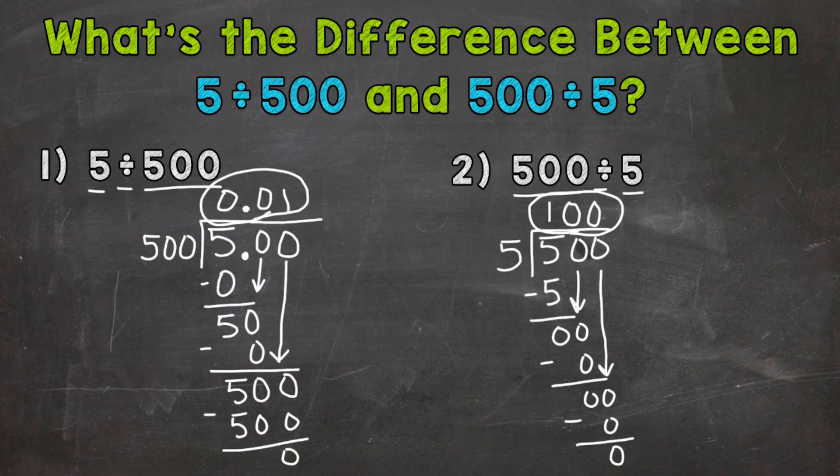So there you have it. There's the difference between 5 divided by 500 and 500 divided by 5. So order matters in division. Not which number is larger or smaller in value. So be careful with how you set up division problems.